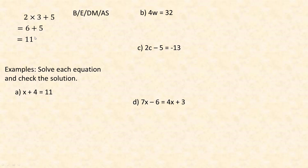We can work backwards too. Pretend we didn't know the 2 — we have something multiplied by 3 with 5 added, giving 11. Work backwards: the last thing done was add 5, so the opposite is subtract 5 — 11 minus 5 is 6. Then we multiplied by 3, so the opposite is divide by 3 — 6 divided by 3 gets us back to 2. We use BEDMAS in the opposite order to solve equations.